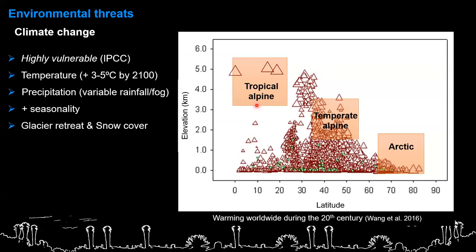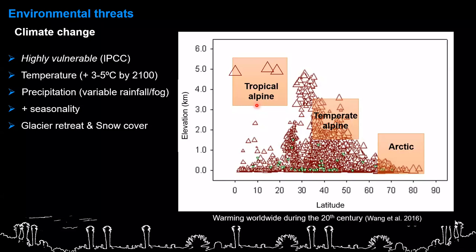Not necessarily all alpine areas are going to suffer drastic changes in precipitation, but if you don't see an important change in rainfall, that change can actually come from other kinds of precipitation such as fog. What is expected, especially in tropical alpine mountains, is an increase in seasonality - more extreme dry months and at the same time wet months. All of this is combined with important glacier retreats and a change in snow cover in temperate areas.